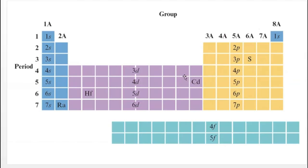Cadmium is in the 4d10 position — that's exactly how you do it. This is true for most elements. There are some exceptions in the d4 and d9 positions, which we'll talk about in a minute. Also note: period 1 starts with s (1s), then 2p, 3d, 4f.